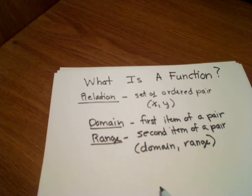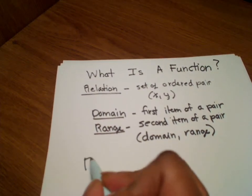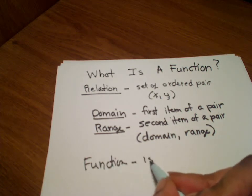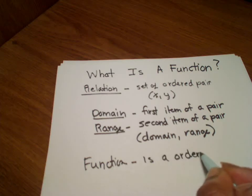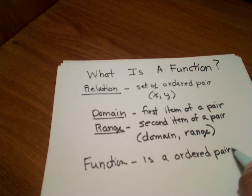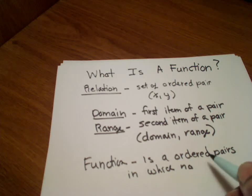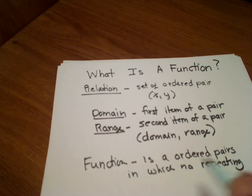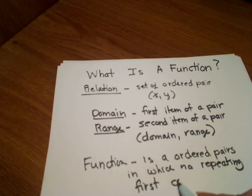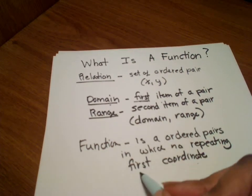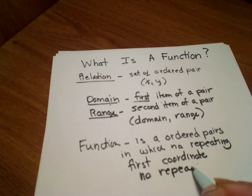So then, after having this, what makes it a function? What makes it a function is this: a function is a set of ordered pairs in which there are no repeating first coordinates. Since the first coordinate is the domain, that basically means no repeating domain.